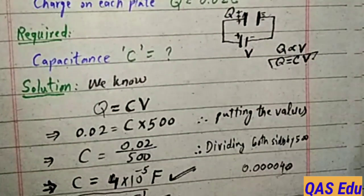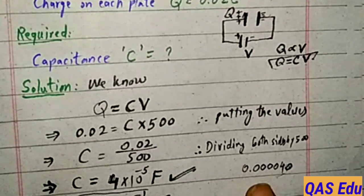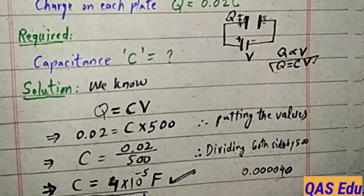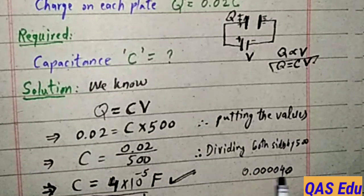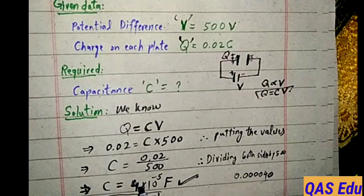Using calculator, 0.02 divided by 500 gives 4 multiply by 10 power minus 5. This is in scientific notation. The point moves left, one place means 10 power minus 1.